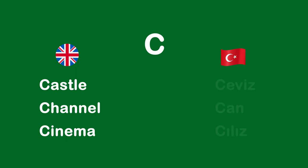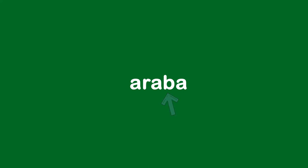Let's see examples: 'Ceviz', 'Can', 'Cılız' — it's always the same sound. So after you learn the sounds of the letters in Turkish, the only thing you need to do is connect those sounds. For example, 'Araba' — A, R, B — Araba. It's very easy.